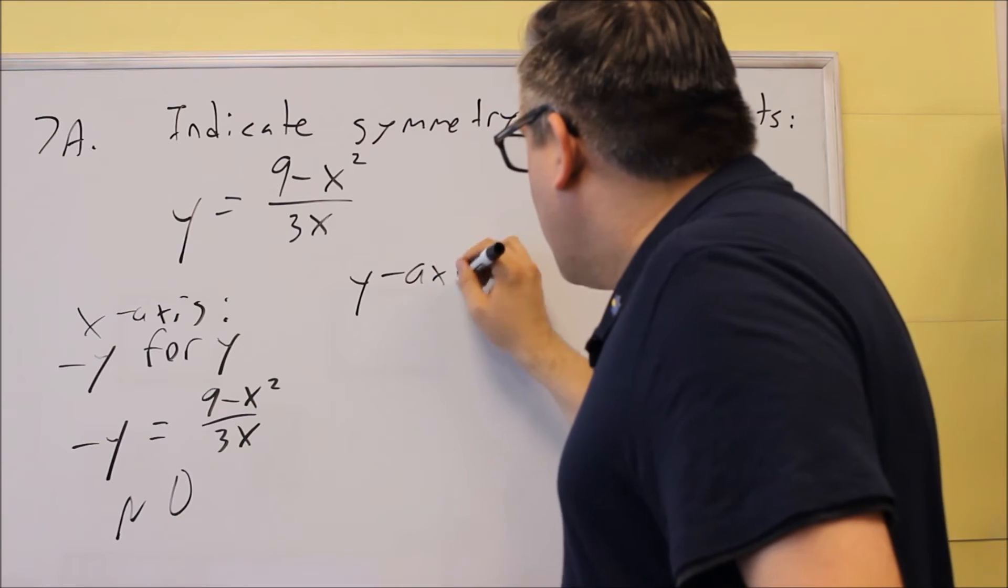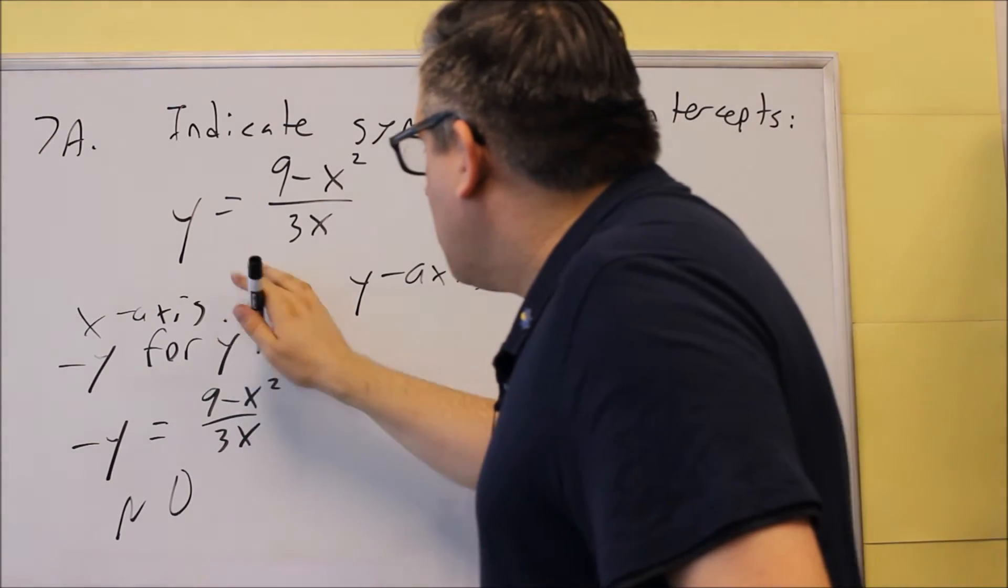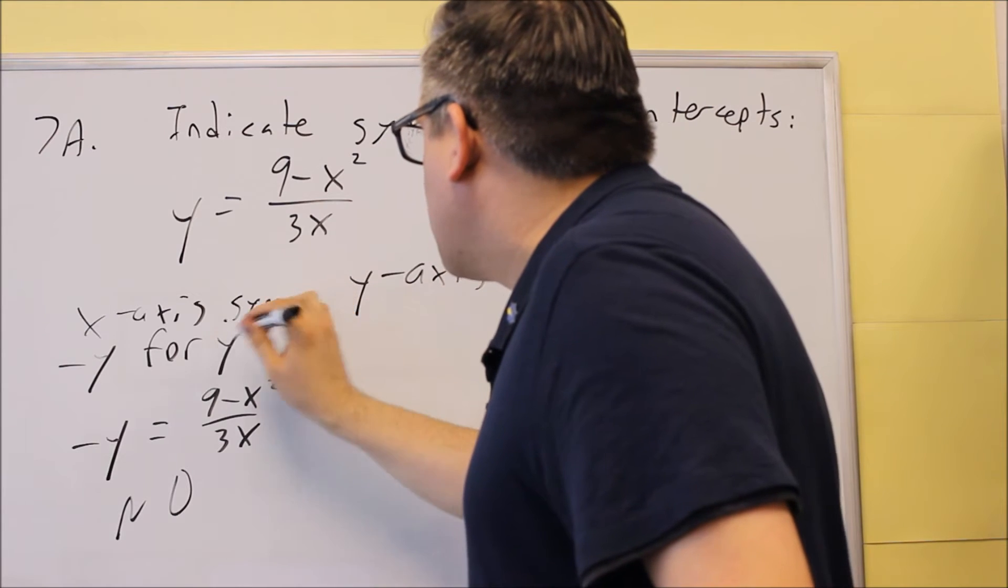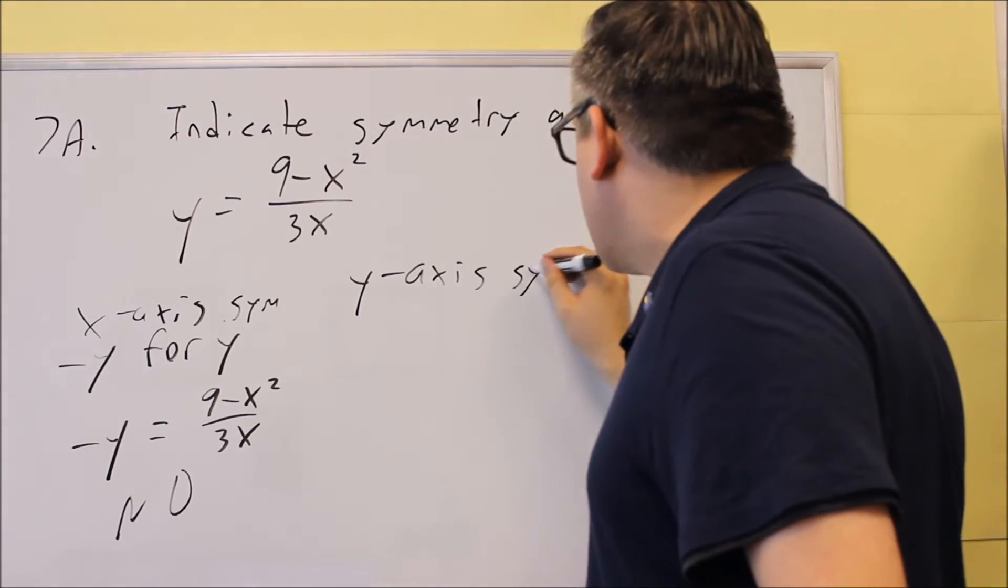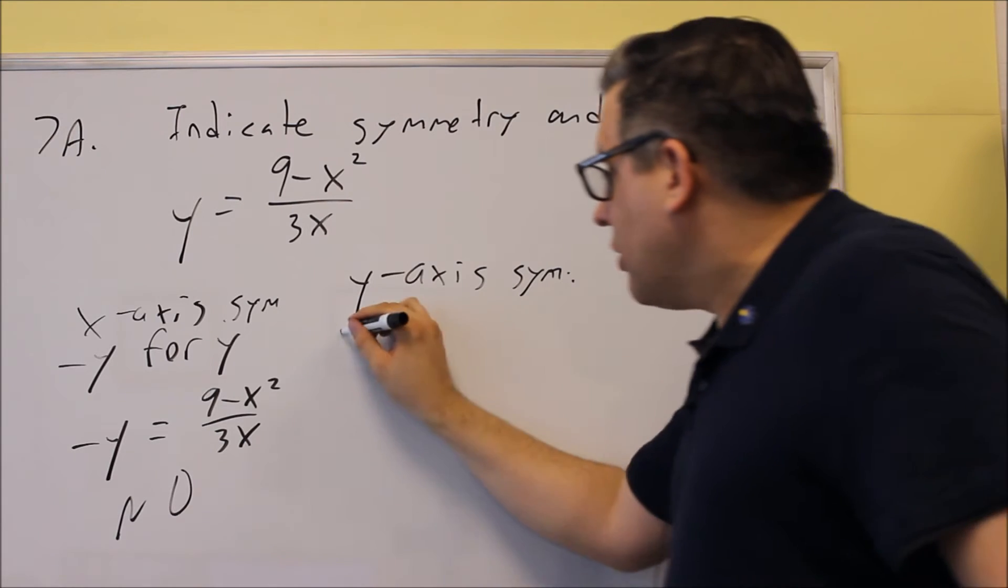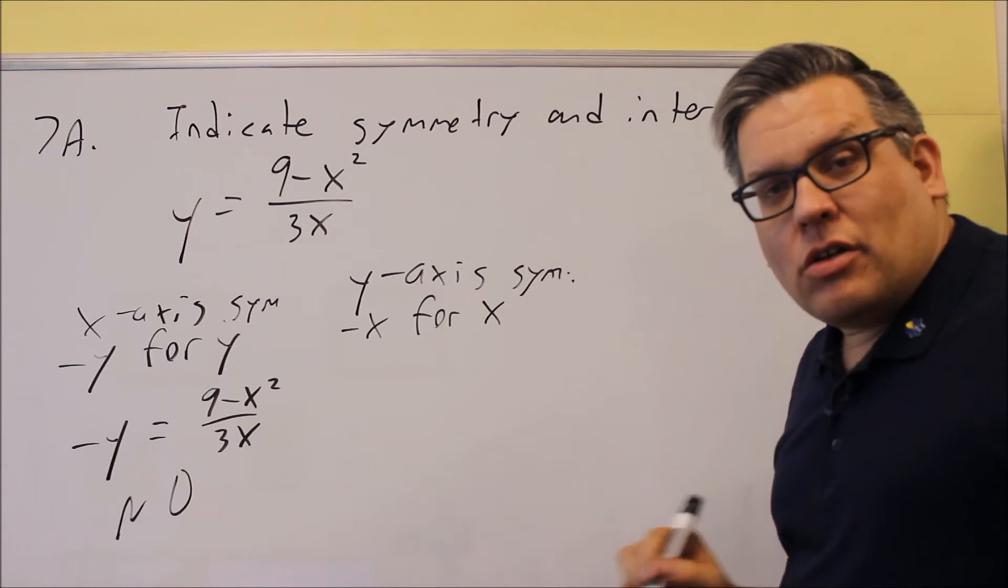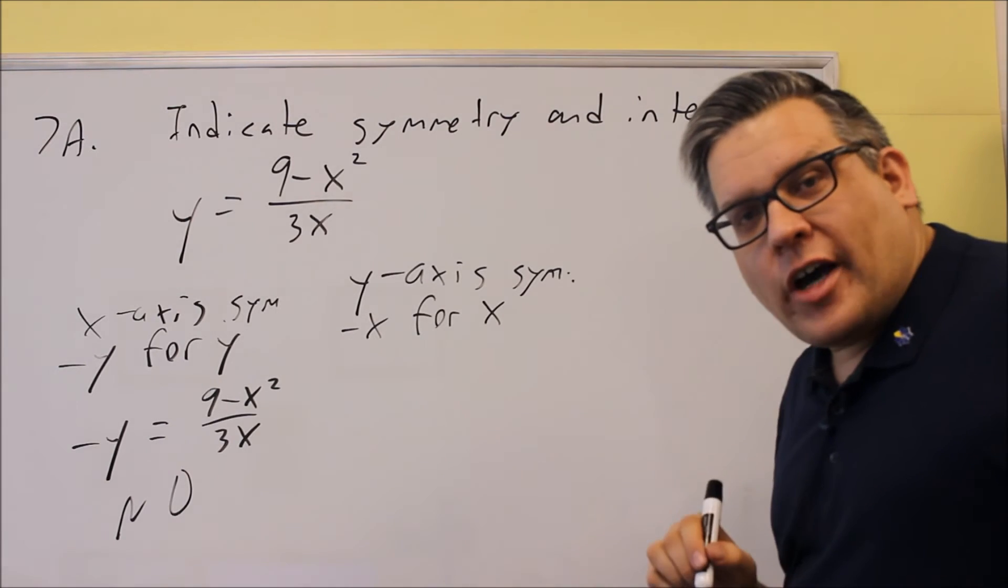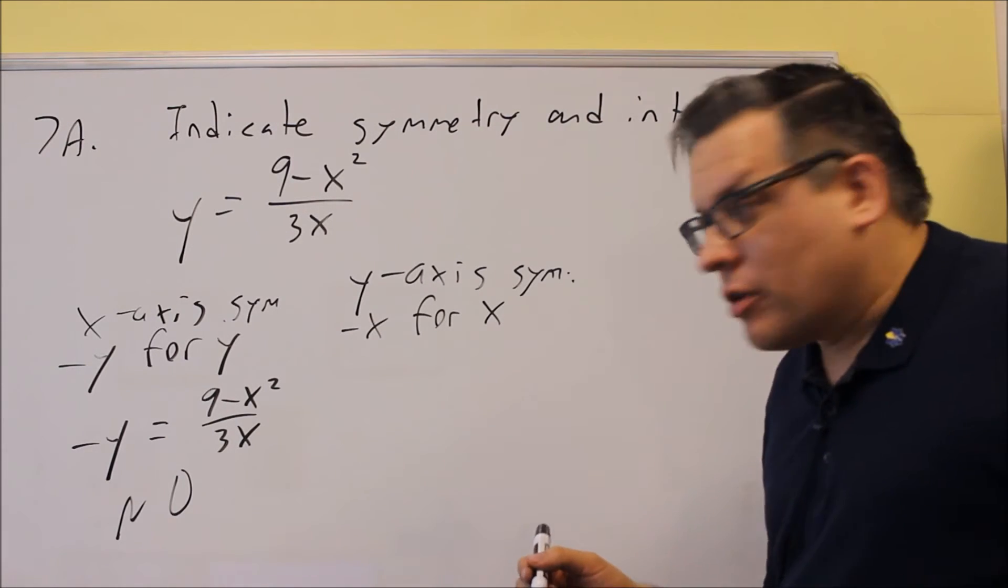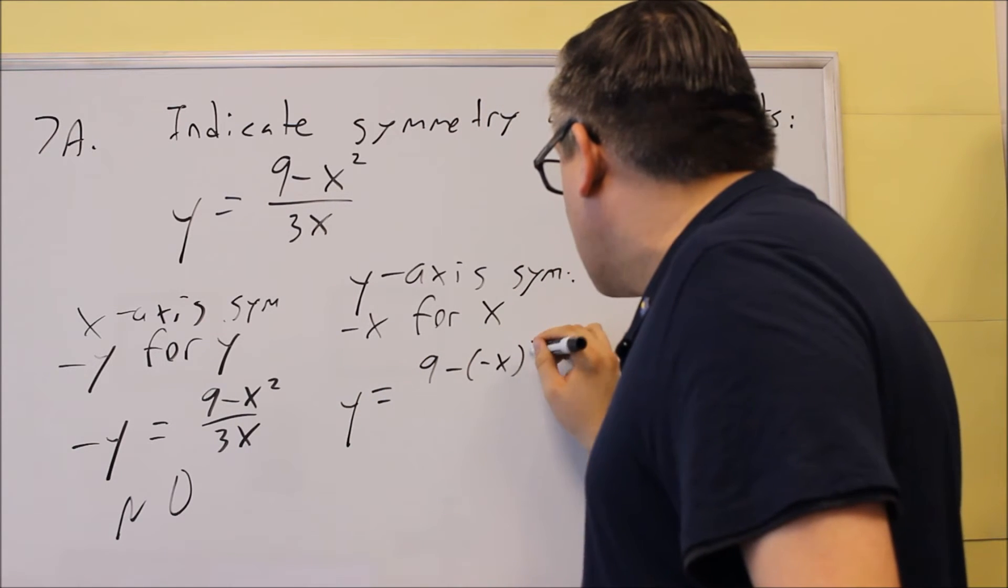The next one I'm going to test for is the y-axis symmetry. So let me make this more clear here. So symmetry we have for that one, and this is symmetry we're looking for here. Now for this one, you're going to put a negative x in for x, and simplify and see if you get the same thing you started with. So we do that for this one, you're going to do (9 - (-x)²)/(3 × (-x)).